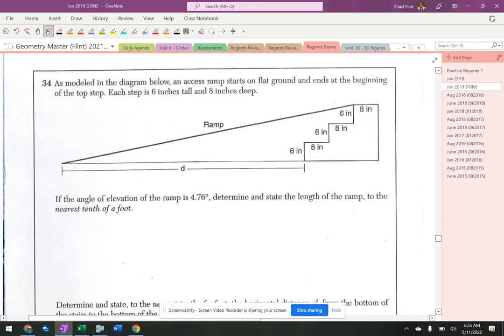Alright, so we got a ramp and we got some stairs, and it tells us some things about the ramp and wants us to figure things out. A super common question in terms of real life. The angle of elevation is 4.76 degrees, that's right there.